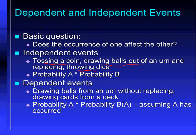So how do we calculate the probability of dependent events? We multiply the probability of A times the probability of B, assuming A has already occurred. We'll see how that works in this question.